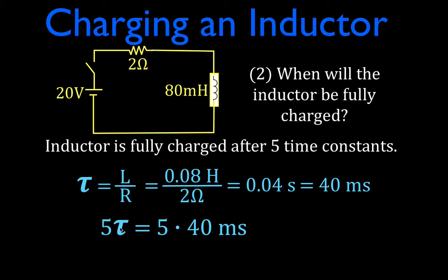5 times tau here is 5 times 40, 200 milliseconds, and that's actually also 0.2 seconds. Okay, number two.